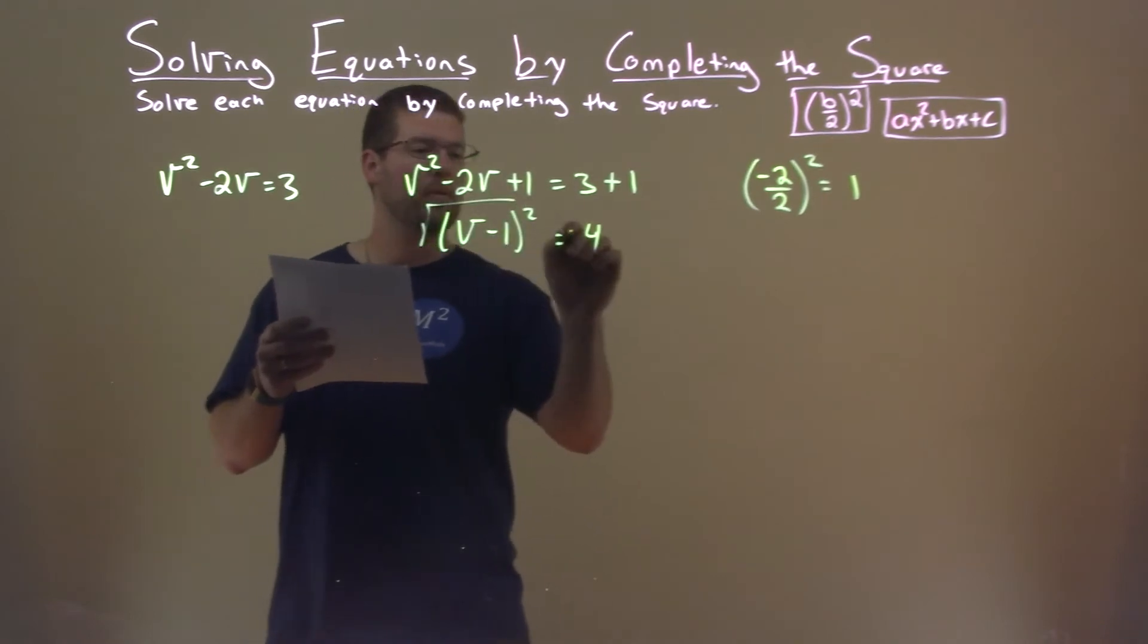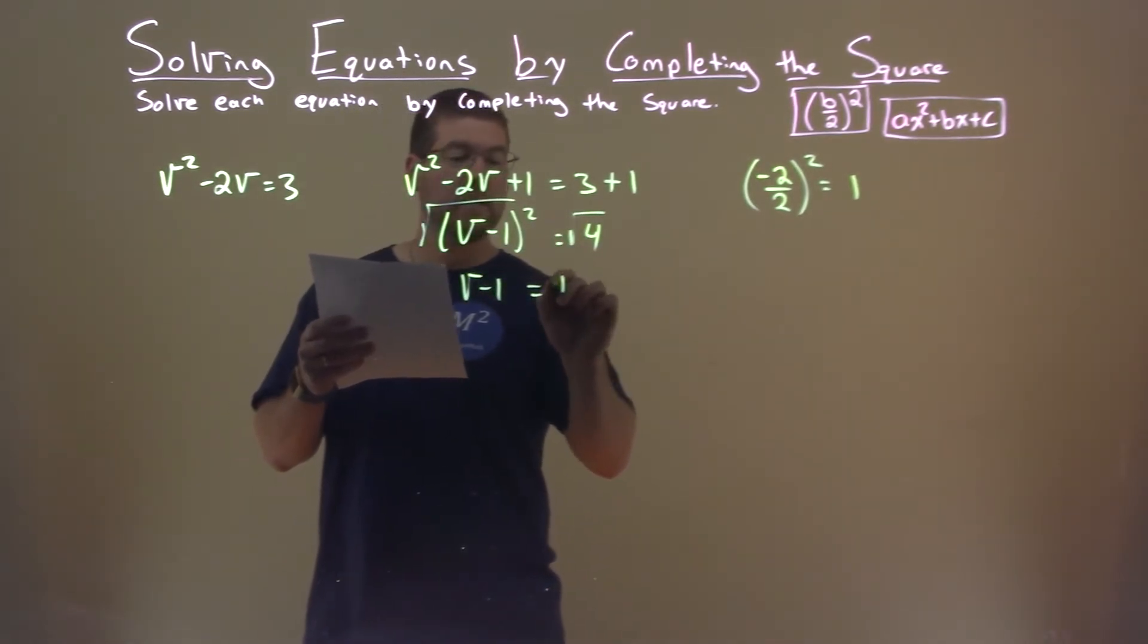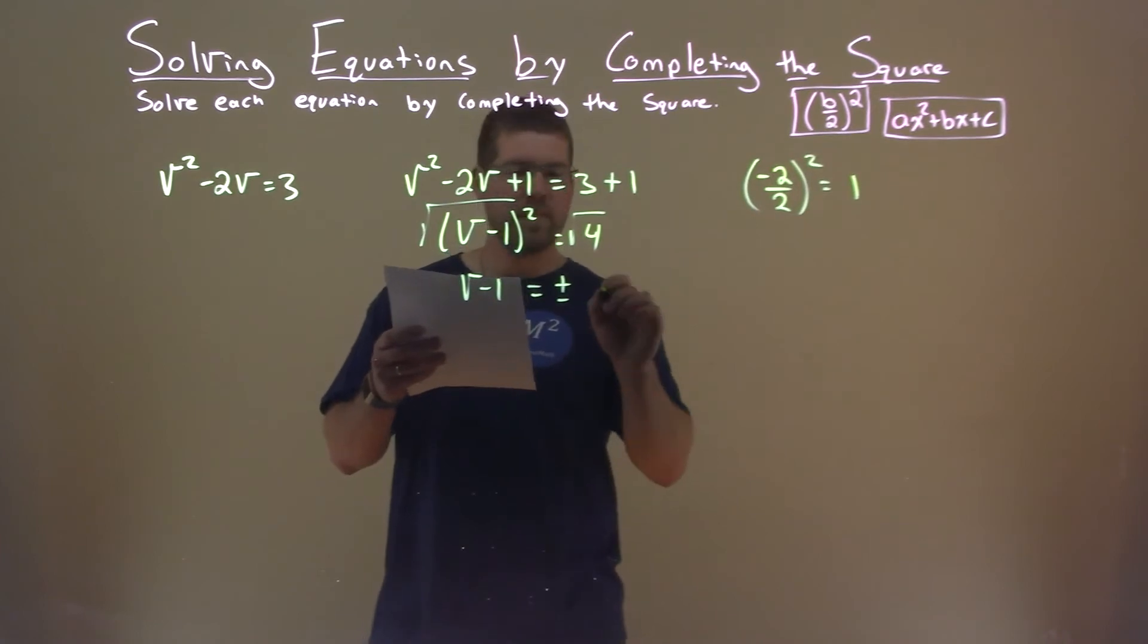Take the square root of both sides now, and we have v minus 1 equals plus or minus the square root of 4, which is 2.